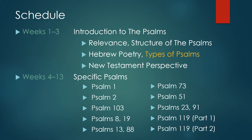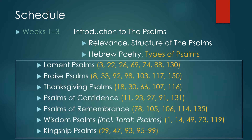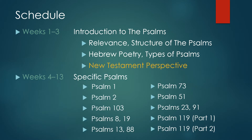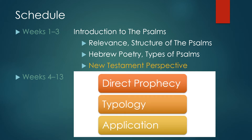There are different types of Psalms. There's lament, praise and thanksgiving, which are probably the most common ones. And then there are Psalms of confidence, Psalms of remembrance, wisdom psalms, and kingship psalms. When it comes to the New Testament, the Psalms are in fact the most quoted book. Psalms look at it from the lens of the coming of the Messiah, and we talked about direct prophecy, typology, and application.